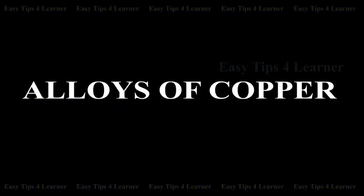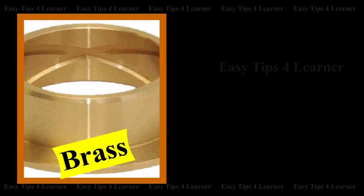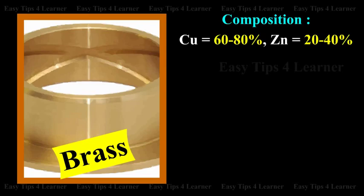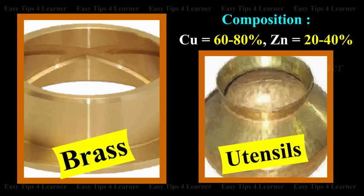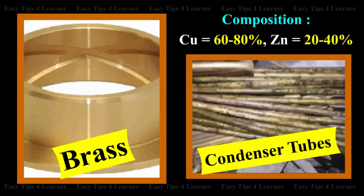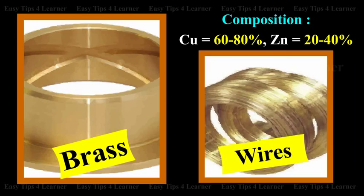Brass is an alloy of copper with the composition: copper 60 to 80 percent, zinc 20 to 40 percent. The uses are for making utensils, condenser tubes, wires, etc.